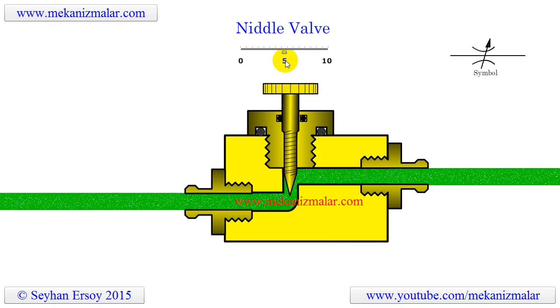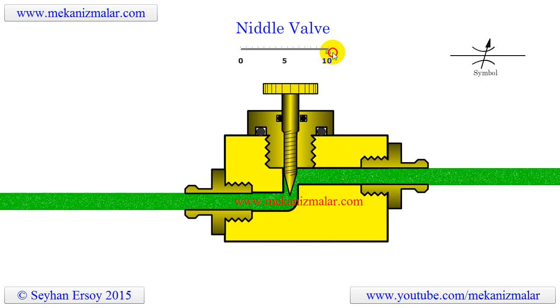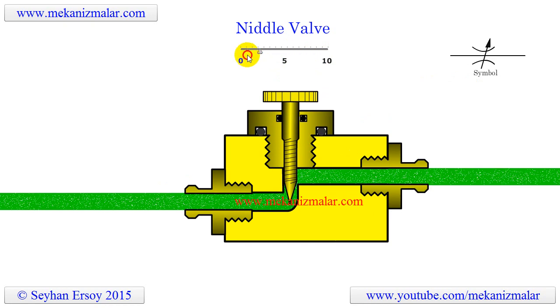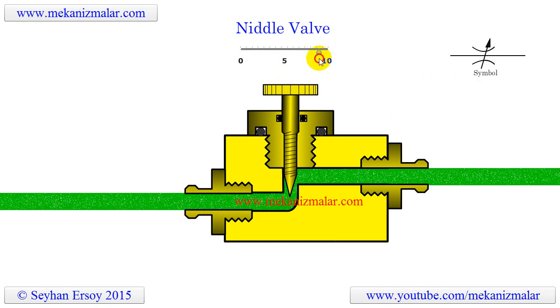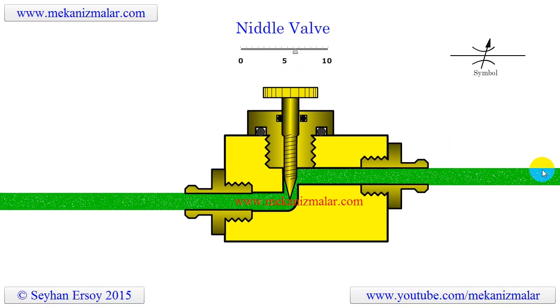By controlling an opening inside the valve by a needle, the amount of air passing through the valve can be reduced or increased. Using this valve, the speed of the piston of an air cylinder can be controlled.